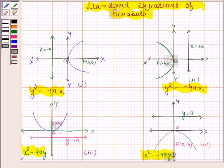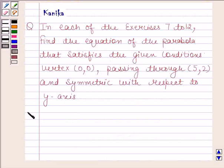So keeping this in mind, let us now begin with the solution. We are given that vertex is (0,0), parabola is passing through (5,2), and is symmetric with respect to y-axis.